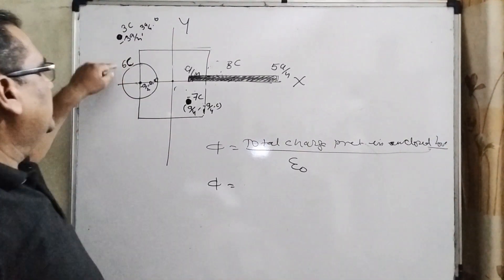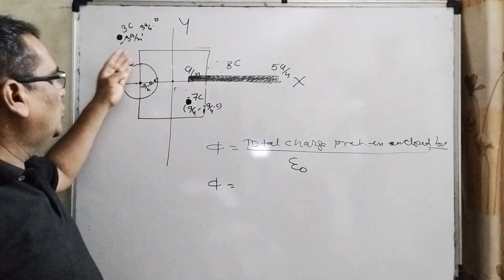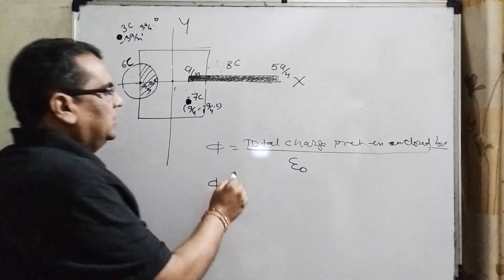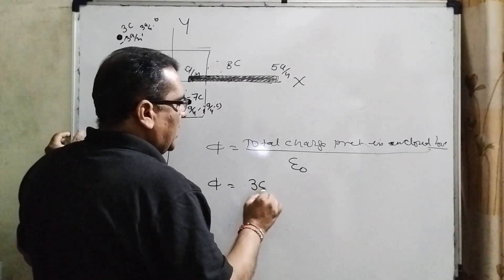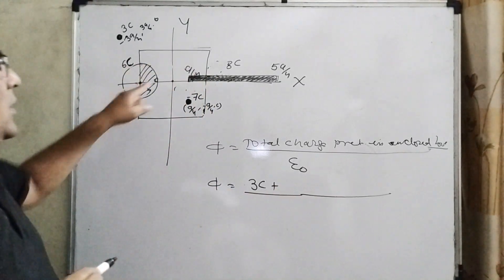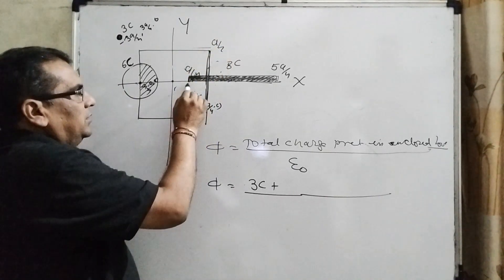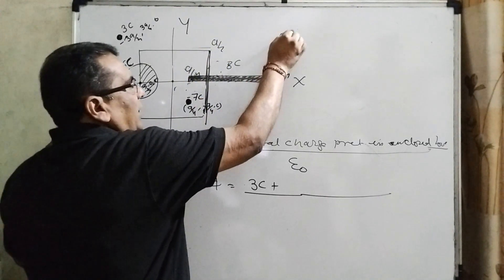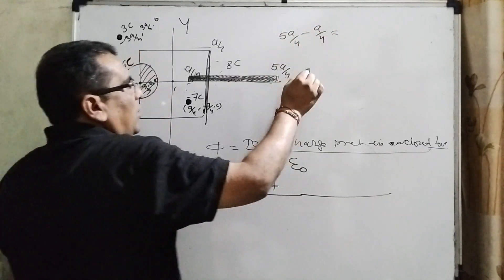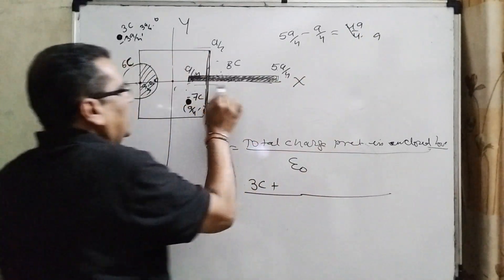Now, you can see the 6C charge of the disc. So only half part is enclosed inside, means 3C charge is present on the disc in the closed part. This is a/2. You have already given the a/2 portion. Total 5a/4 - a/4, the length of this rod is a. Total a length.